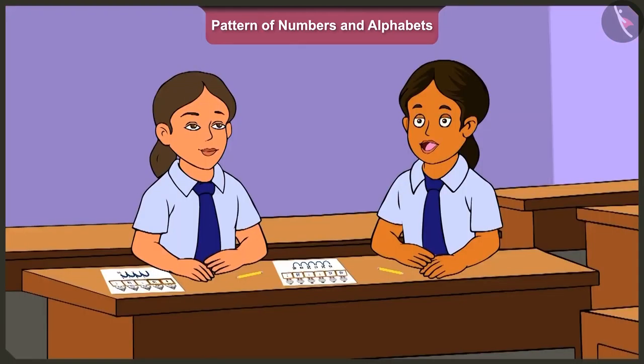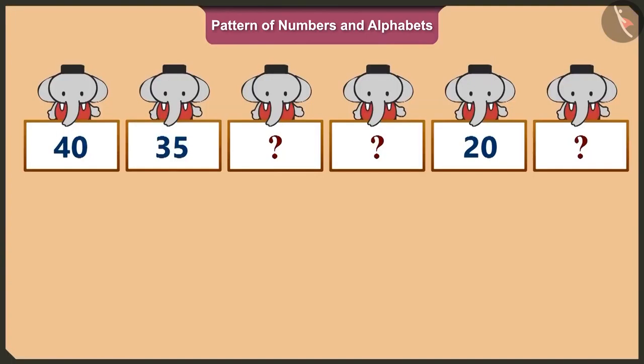Yes. We can solve this puzzle by subtracting five from each term. On subtracting five from thirty-five, we will get thirty. And on subtracting five from thirty, we will get twenty-five.